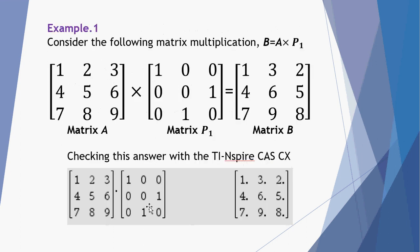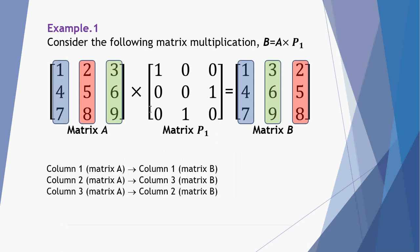Let's see how they're applied. I have here a matrix A multiplied by a particular permutation matrix giving matrix B. I've verified this with a CAS calculator. Looking closely at what's happening: column 1 in matrix A is now column 1 in matrix B. However, column 2 in matrix A, indicated with red colouring, has become column 3 in matrix B. And column 3 in matrix A has been relocated to column 2 in matrix B. This is summarised at the bottom of the screen.